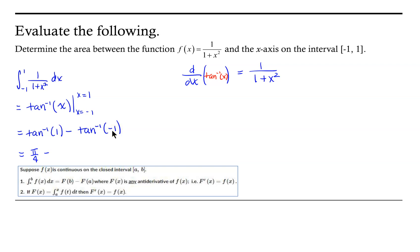So, I need an angle between negative pi over 2 and positive pi over 2 that has a tangent equal to negative 1.